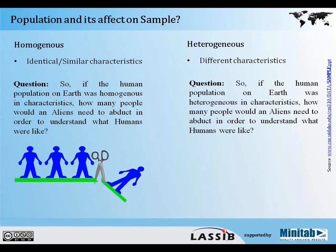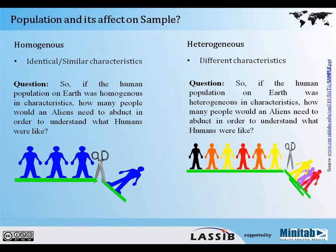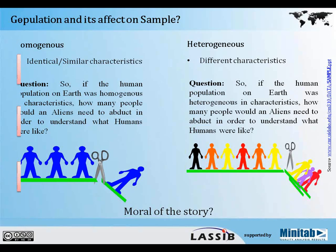Now let's see how heterogeneous comes into the picture. If the population is heterogeneous in nature — how many people would an alien need? The answer is many, because then we are talking about different countries, different characteristics: people from the US are different from people from the UK or India, and within India you find differences. So you would need many samples to infer anything about the population. The moral of the story: the less variability you have in your process, the fewer samples you need to correctly infer about the population. That's the key takeaway.